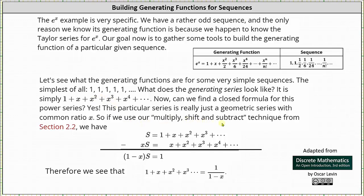Because of this, we can use the multiply, shift, and subtract technique from section 2.2. We set the given series equal to s. Next, we multiply both sides by x, shift the right side to the right, then subtract the two equations. We have s equals 1 plus x plus x squared plus x cubed and so on. Multiplying both sides by x gives xs on the left, and x plus x squared plus x cubed on the right. Subtracting, the quantity 1 minus x times s equals 1. Dividing both sides by 1 minus x, the generating function for a sequence of 1s is 1 divided by the quantity 1 minus x.